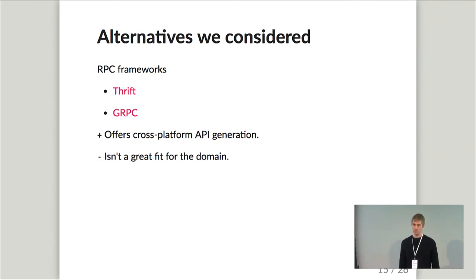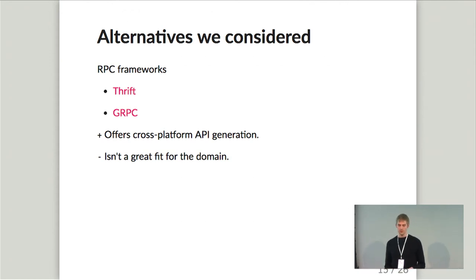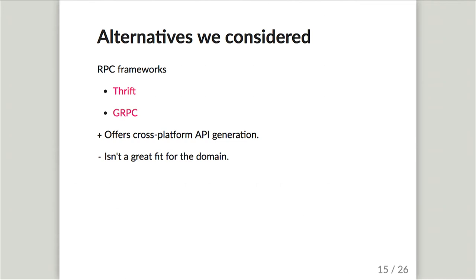Before I dive into Djinni a bit more, some alternatives we considered: we looked at RPC frameworks. The main benefit is that they offer the same kind of cross-platform API generation and data marshalling. But it turned out not really to be a great fit for the domain — they're typically not designed for running in-process, which makes sense given their usual applications. Maybe gRPC might offer this eventually; I think the Java implementation has an in-process server right now, but it's not quite there yet. Another problem is that they can be really heavyweight. Thrift in particular generates a lot of classes, and on Android that can become a problem — there's even a Microsoft project called Thrifty intended for Android to reduce the number of classes that Thrift produces.